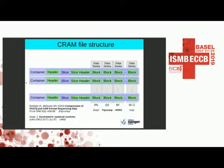Each block in CRAM is self-describing — it states how it's being compressed. It can use standard codecs like GZIP, BZIP2, or LZMA, or custom codecs written specifically for CRAM. This is where CRAM 3.1 fits in: it introduces new codecs that are more performant.